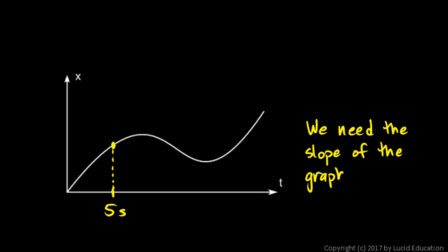We need the slope of the graph at that point. But if we try to calculate the slope here, we can't do rise over run — we can't do delta x over delta t — because this is just one point. Our delta x would be infinitely small and our delta t would be infinitely small. You can see the graph does have a particular steepness at this point — it's steeper here than say over here — but we can't do rise over run for a single point.